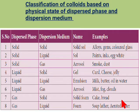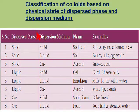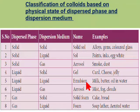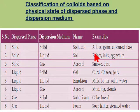Classification of colloids based on the physical state of dispersed phase and dispersion medium. These are the dispersed phase, the dispersion medium, their names, and examples. The first one: solid in solid is called a solid sol. Examples include alloys, gems, and colored glass.